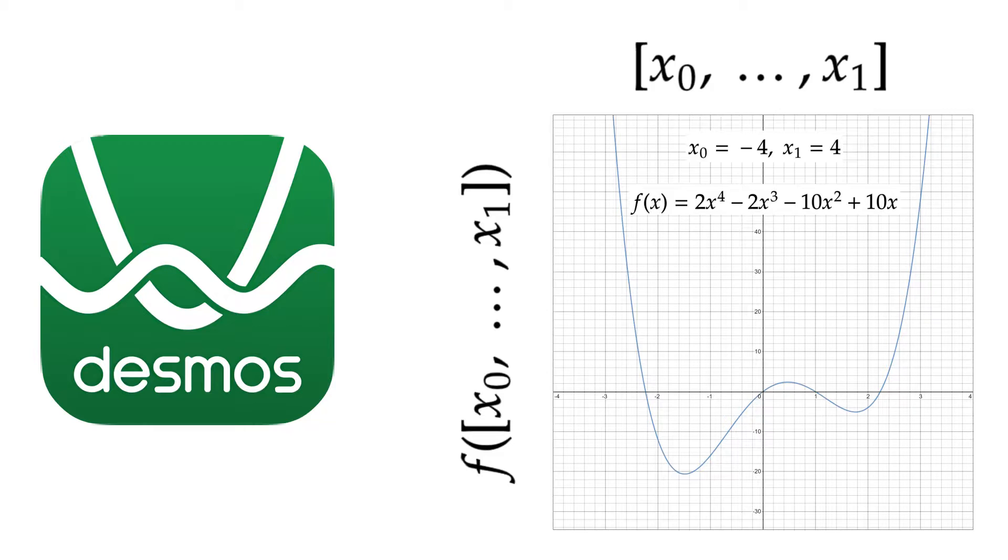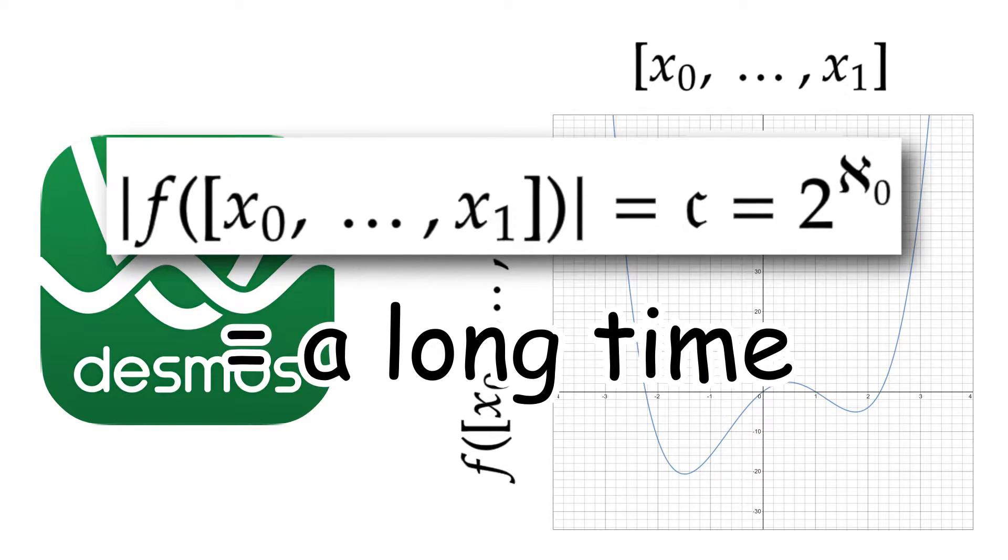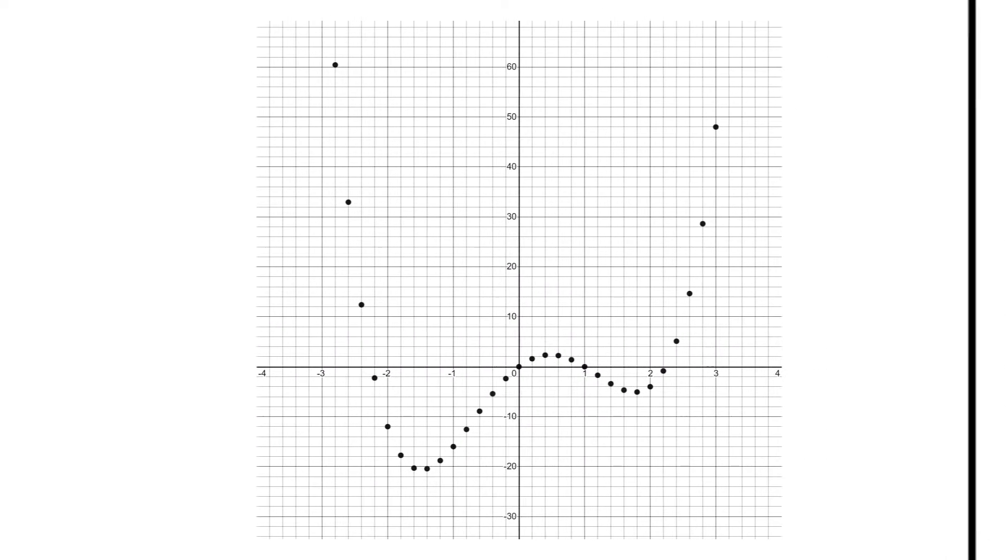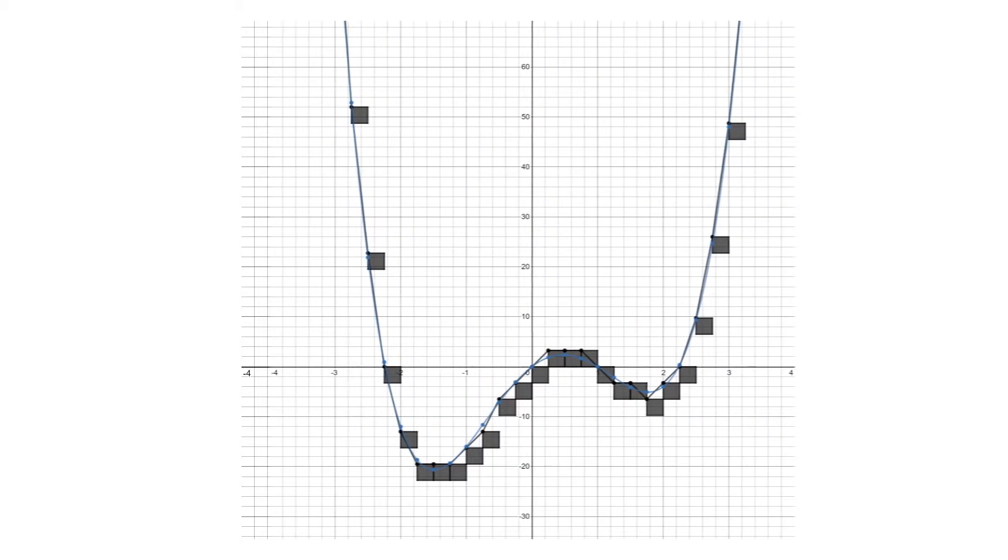Realistically, graphing calculators don't have enough time to plug in an infinite number of values into a function, so they cut corners and only plug in numbers over a reasonable interval. This interval could be anything, but usually it would make the most sense for it to correspond with something like the number of pixels on a screen.